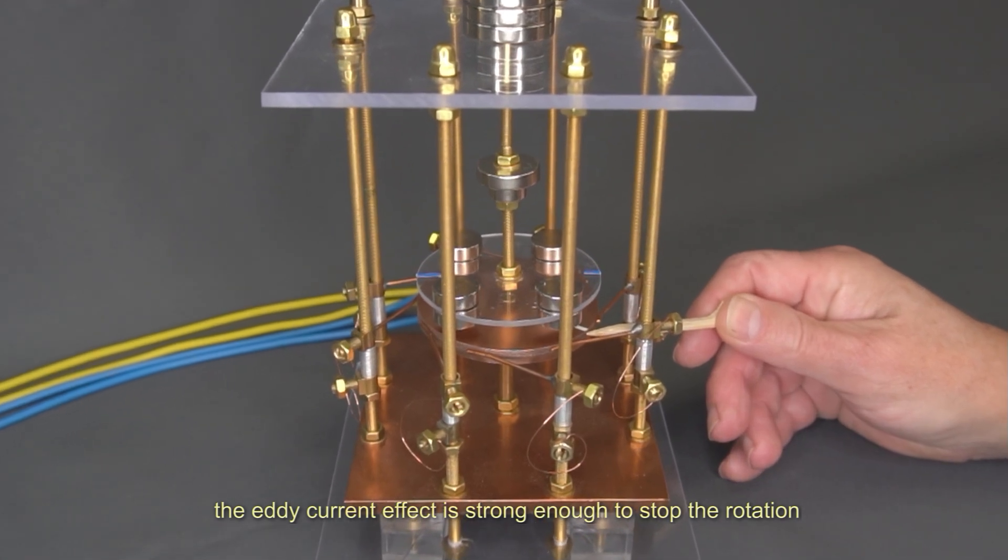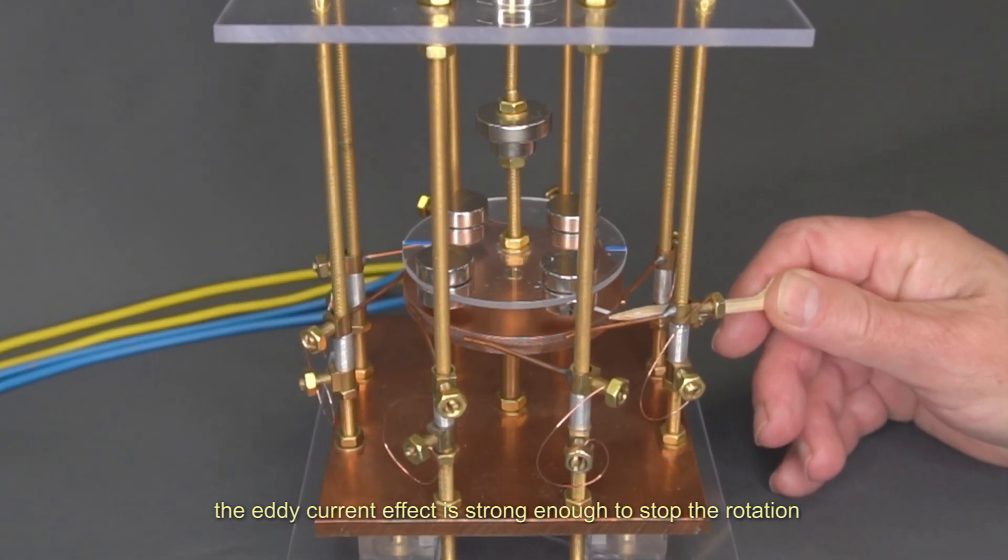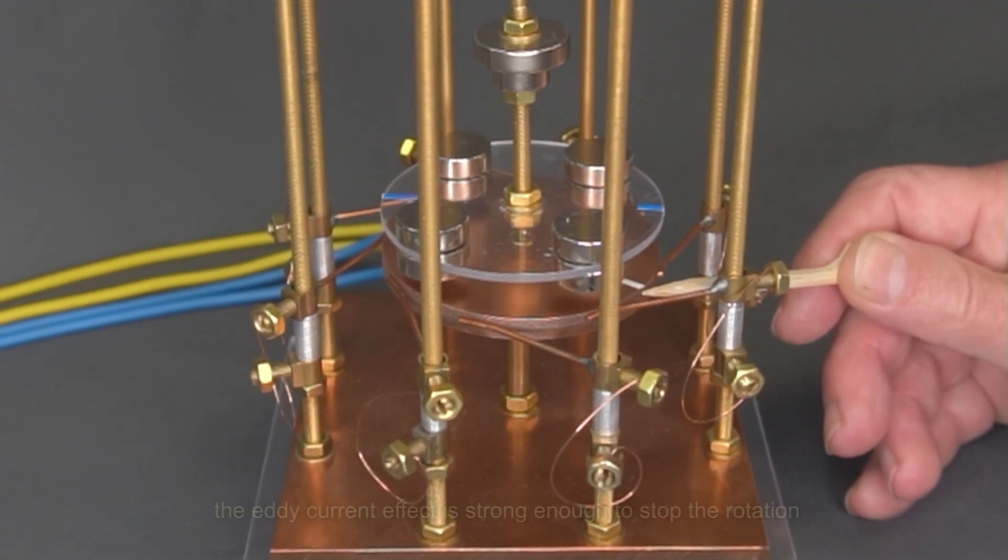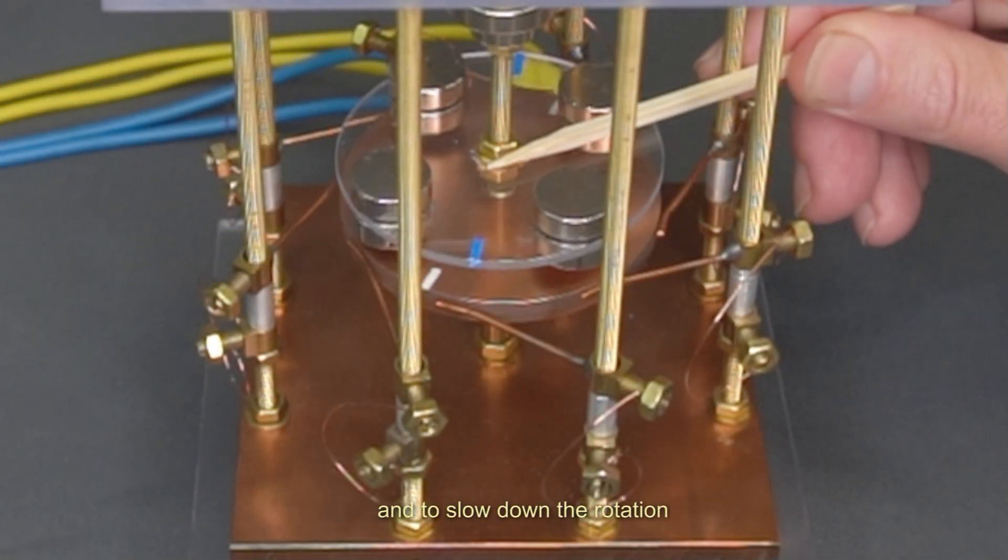The eddy current effect is strong enough to stop the rotation and to slow down the rotation of the copper disc.